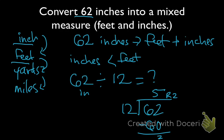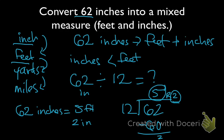That remainder is what we're going to keep as our original unit, so that will be 2 inches. And our quotient is going to move up in measurement to the next highest value. So 62 inches is equal to 5 feet and 2 inches. Our quotient, 5, the number of whole times that our divisor goes into our dividend, is going to be the next highest measure. And then our remainder is going to be our original unit, inches.